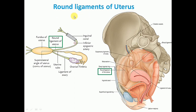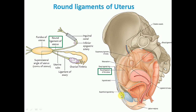The round ligaments of the uterus are fibromuscular flat bands which lie between the two layers of the broad ligament, antero-inferior to the attachment of the uterine tube. Each ligament begins at the superolateral angle of the uterus, runs forwards and laterally, passes through the deep inguinal ring, traverses the inguinal canal, comes out of the superficial inguinal ring and merges with the connective tissue of the labium majus after breaking up into thin filaments. The round ligament keeps the fundus of the uterus pulled forward, maintaining the angle of anteversion against the backward pull of the utero-sacral ligament.